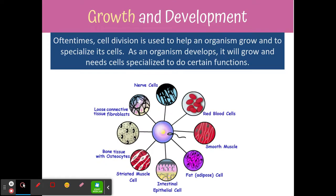Cells also divide because organisms need growth and development. A cell will divide so that an organism can grow. You started with just one cell, so those cells had to divide to give you trillions of cells. As those cells divide, they also become specialized to perform different functions in your body.